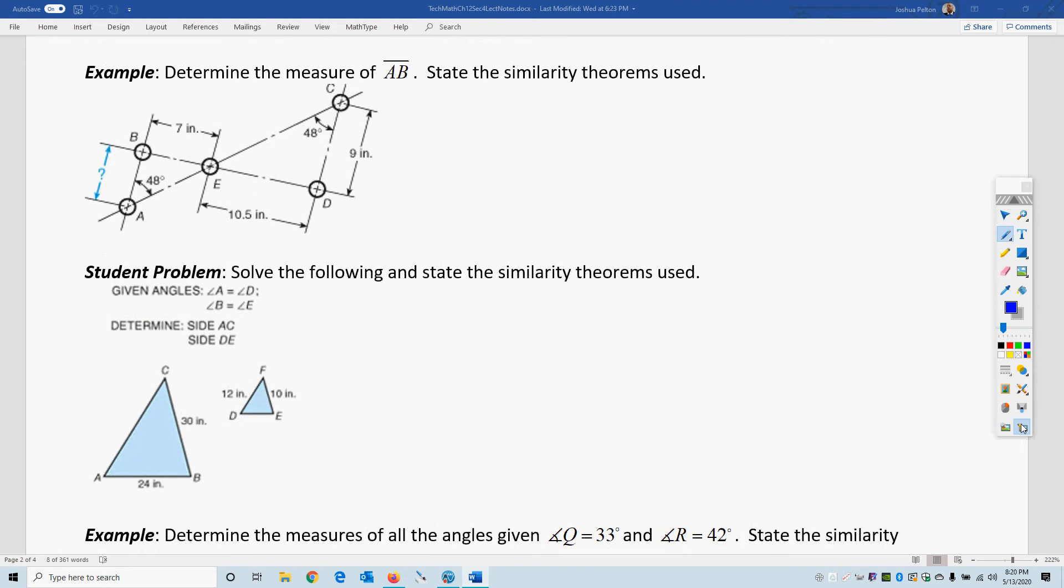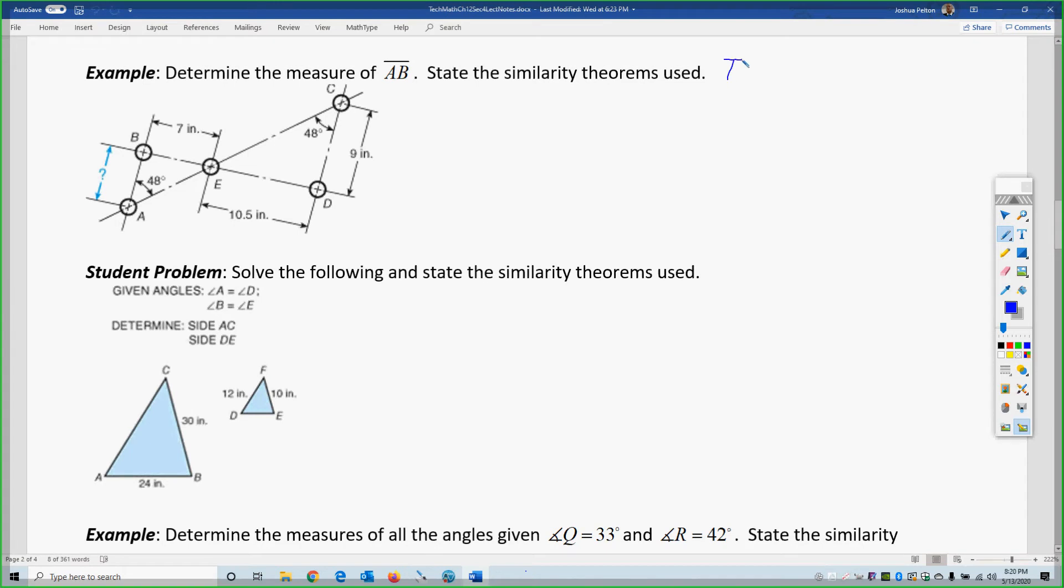So when you set these up, you should decide on the theorem. So theorem 1, and then write your similarity statement. So I will say triangle A, B, E, similar to triangle - whatever you choose the first one, whether it's a polygon or a triangle, the order of the second one matters. So if I start here and do A, B, E, it starts on the 48 and ends on the unknown angle, which is a vertical angle. So if I start in the 48 and end on the vertical angle, that's C, D, E.